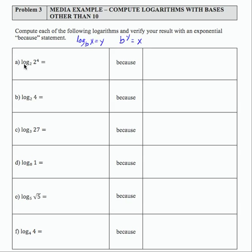So if I have log base 2 of 2 to the fourth, I'm asking myself, what is the exponent on 2 that gives me 2 to the fourth? Well, that has to be 4 because the base 2 to the fourth equals 2 to the fourth. So there's my because statement written in exponential form.